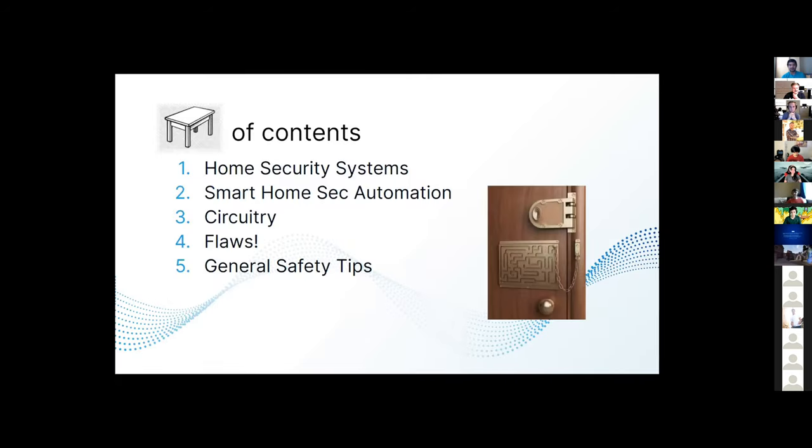Here's a table of contents. The first one will be home security systems, and then we'll be going over smart home security automation. The difference between the two is that in the second section, it'll be about smart home security systems that are integrated into your smart home through your phone. You'll be able to interact with your lights and thermostat. Then we'll go through the circuitry, non-CPE majors beware, and different flaws that have happened through different security systems in the past, and some general safety tips.